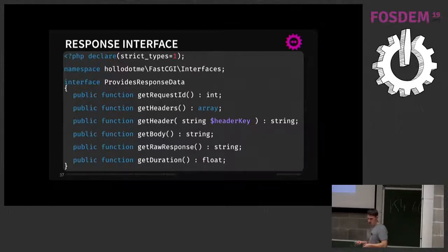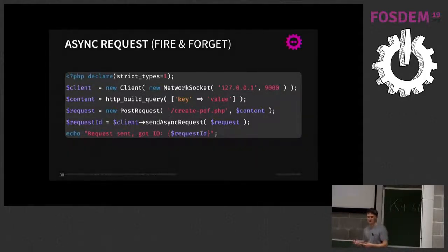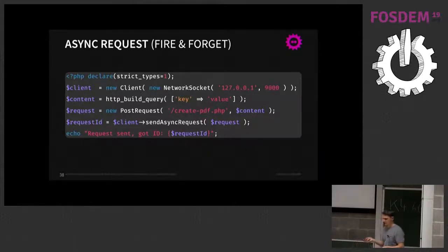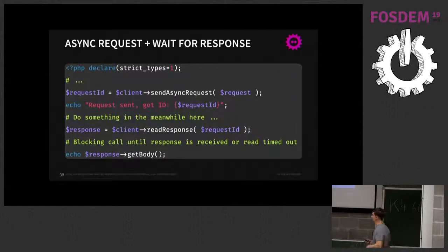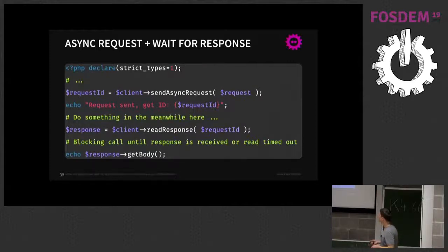To send an async request, use the sendAsync method instead — it returns a request ID. For fire-and-forget you don't need to do anything with it. To get the response, send the request asynchronously, do other work in the meantime, and at the end of your script call readResponse for that particular request ID to get the body.